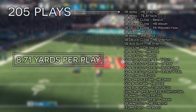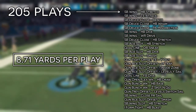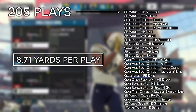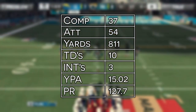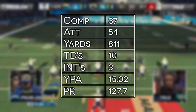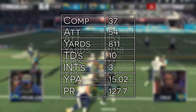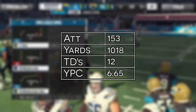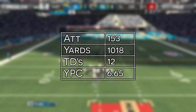Problem ended up running 205 plays, 26 of which were unique, for an insane average of 8.71 yards per play. He ultimately ended up going 37-54 for 811 yards, 10 touchdowns, and 3 interceptions through the air, good for just over 15 yards per attempt and a passer rating of 127.7. On the ground is where he made his mark, toting the rock 153 times for 1,018 yards and 12 touchdowns while averaging just over 6.5 yards per carry.